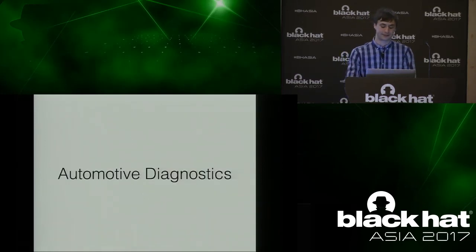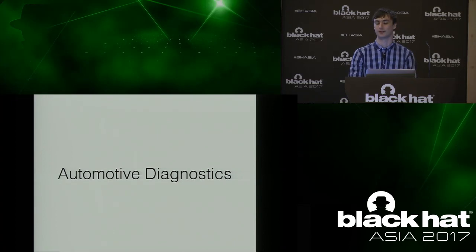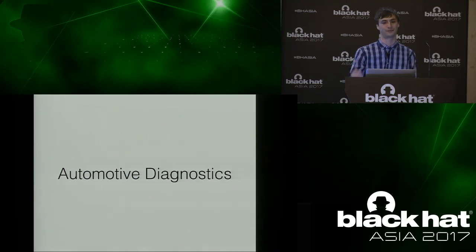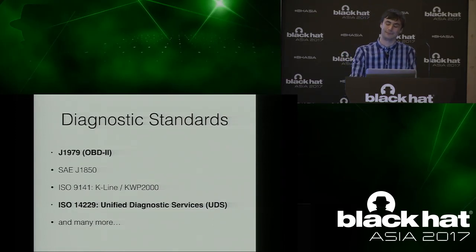Automotive diagnostics presents probably the largest attack surface for the in-vehicle network. There are a lot of standards — like many, many standards. J-1979, also referred to as the OBD-2 standard, is used mostly for emissions purposes. It was standardized originally by the California Air Resources Board for smog testing. I wish we could talk about all of them, but we can't.